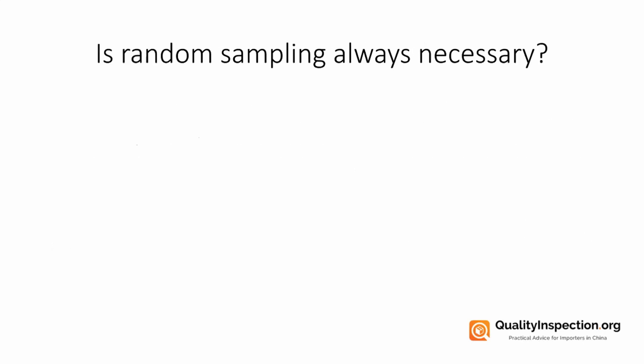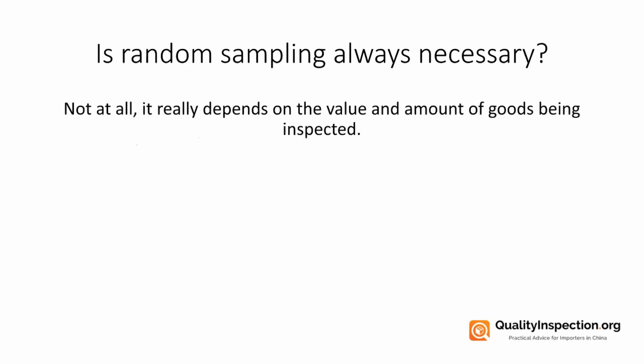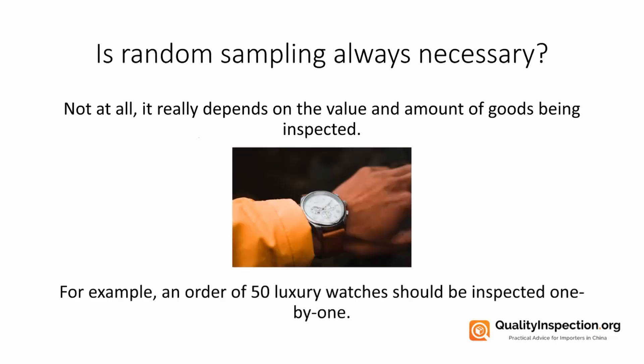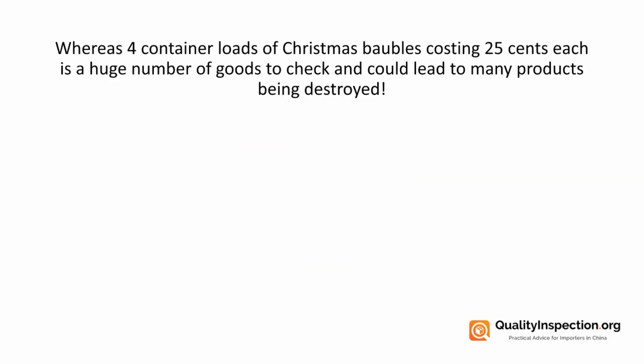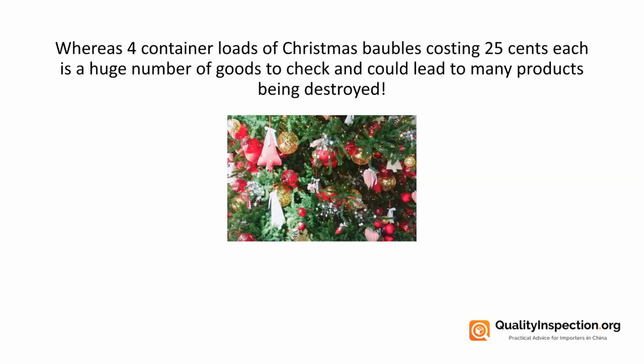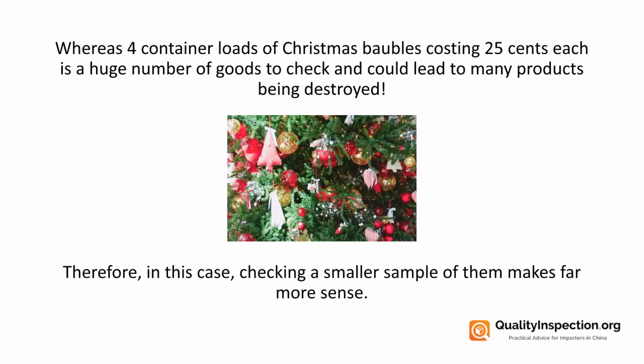Is random sampling always necessary? Well, actually no — it really depends on the value and amount of goods being inspected by your quality inspector. If we look at luxury watches as an example, with an order of 50 luxury watches, all of these would be inspected one by one because the cost warrants spending time checking every one, and with an order of just 50 it's possible to do so. However, in larger orders of cheaper products, it's not possible to check them one by one. If we look at four container loads of Christmas baubles which cost 25 cents each, you're looking at thousands and thousands of items, so checking a smaller sample makes far more sense.